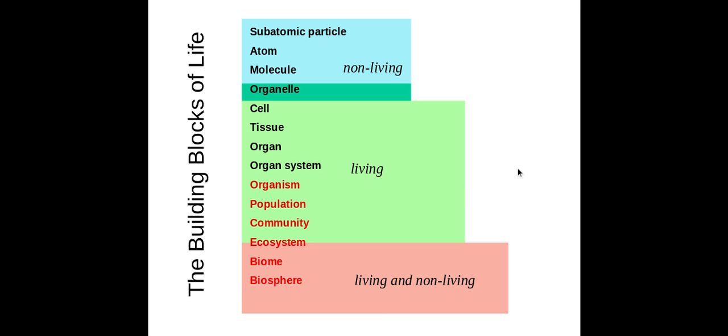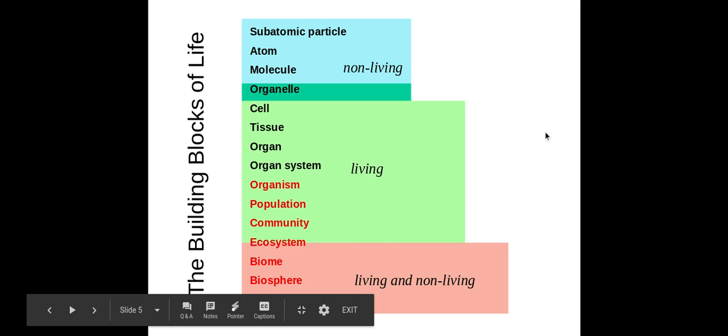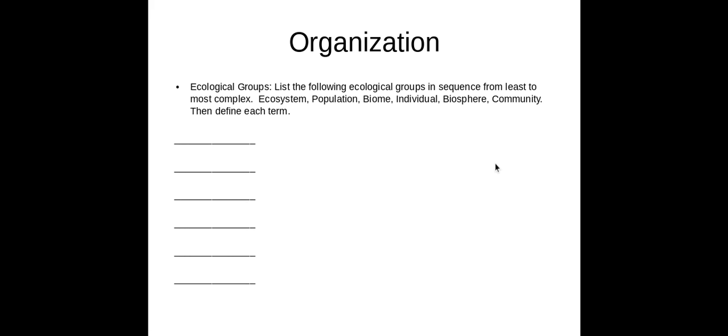You'll take a closer look at biomes in another activity. Finally, the biosphere is the region of a planet — in our case the Earth — where life exists; it's all life on that planet in the zone that it exists in. Pause and see if you can organize these groups from least to most complex, check with your neighbor, then go on to the next slide.